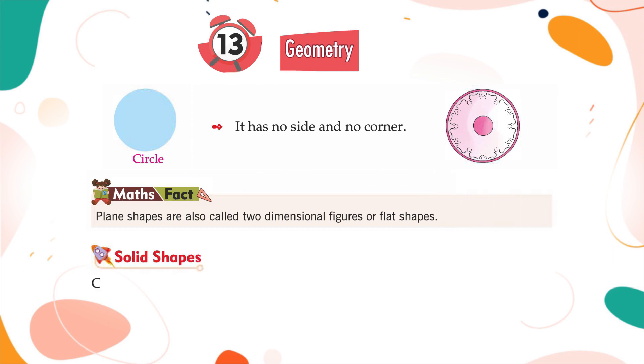Solid Shapes: Cubes, cuboids, spheres, cylinders and cones are known as solid shapes. They are also called three-dimensional figures.